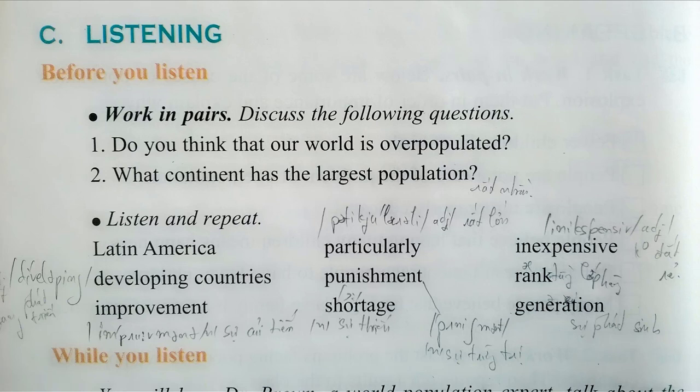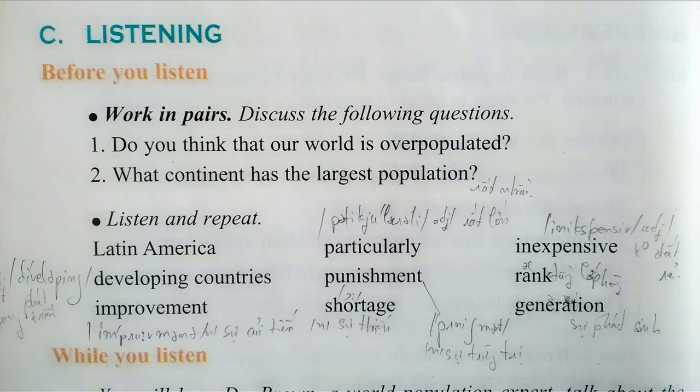Good evening, ladies and gentlemen. In our program tonight we are honored to have Dr. Brown, a world-famous population expert. Dr. Brown, could you tell us something about the world population? Well, there are over 6 billion 700 million people in the world today, and the total is increasing at the rate of about 76 million a year. Experts say that the population of the world could be over 7 billion by the year 2015.